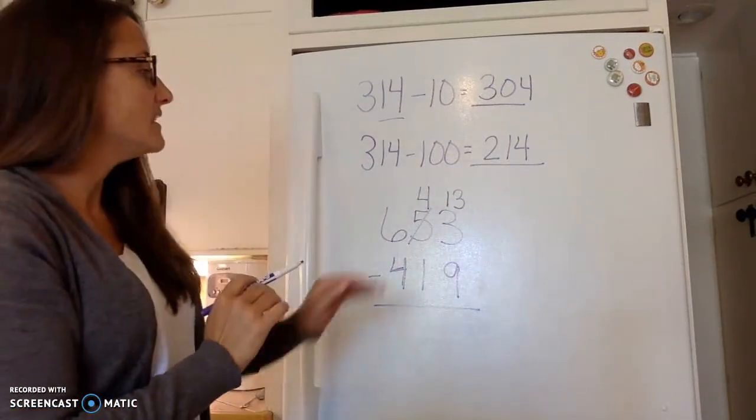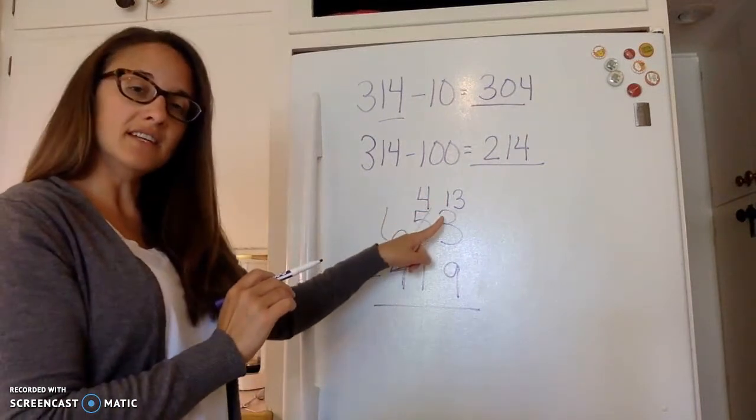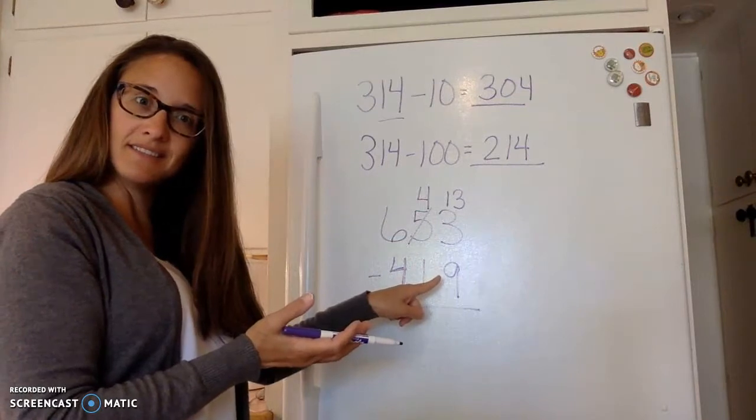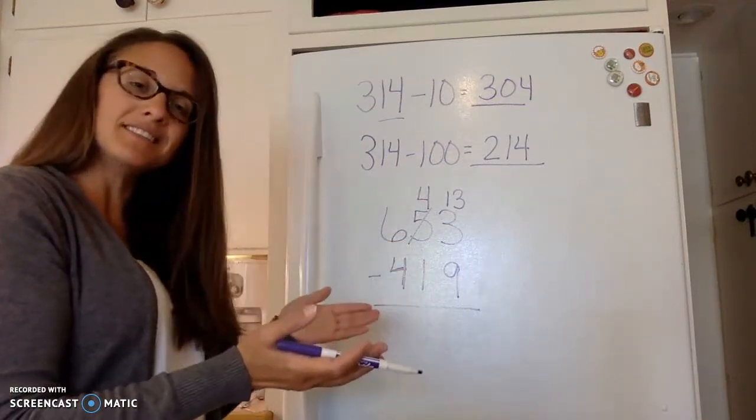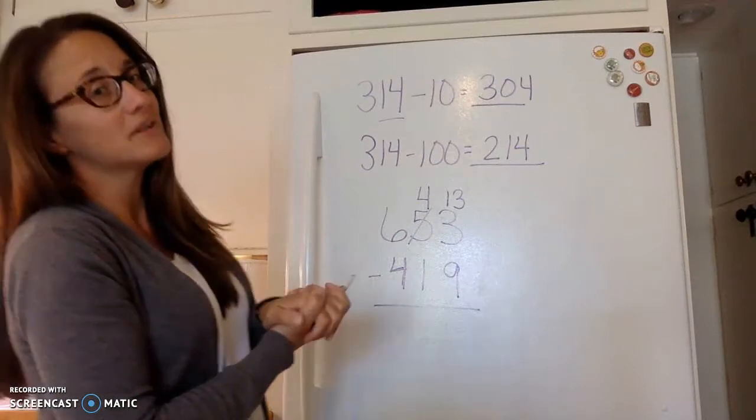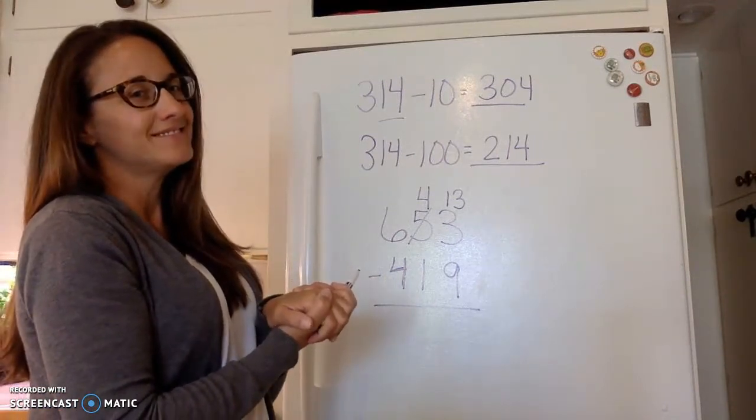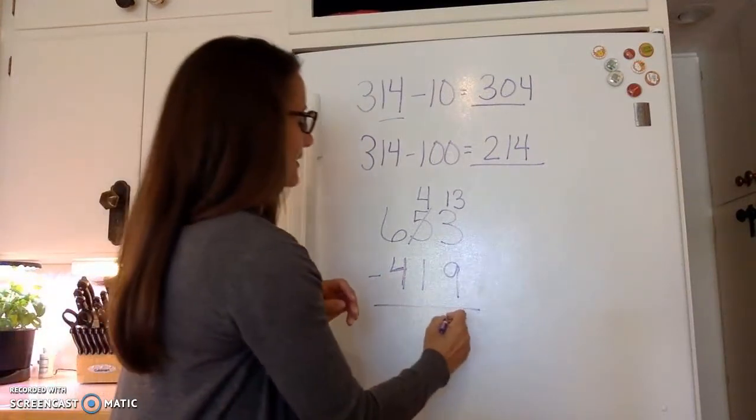Now let's see if that makes sense. I have thirteen cookies and mom wants nine of them. Does that make sense? Yeah that makes more sense. So we can do that. Here's where you need to know your facts really well. Thirteen minus nine. What do you have? Four.